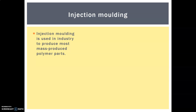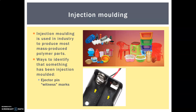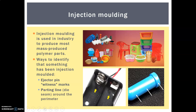Injection moulding is used in industry to produce most mass-produced polymer parts — if you can think of it, it's probably injection moulded. You can identify injection-moulded products by flipping them over and looking for ejector pin witness marks — little circular points where it's been pushed out of the mould — and a parting line around the perimeter from the seam of the two halves of the die.